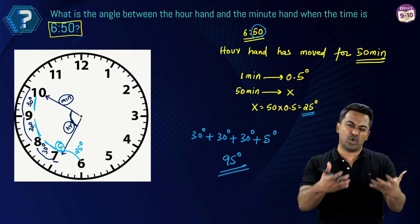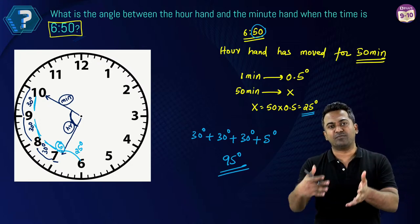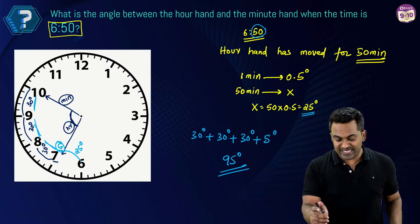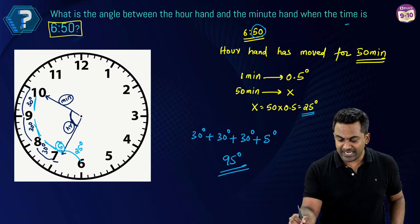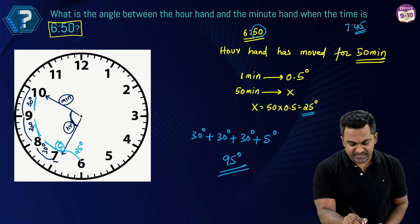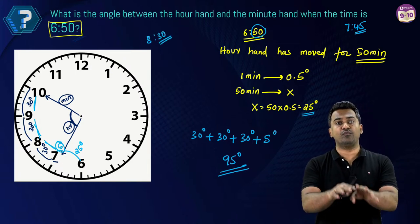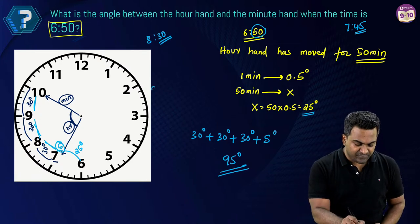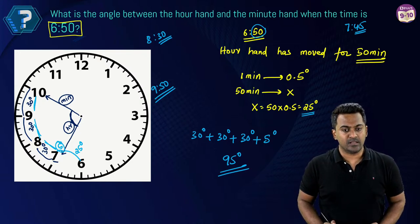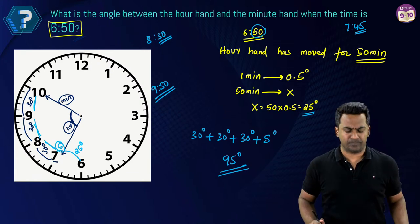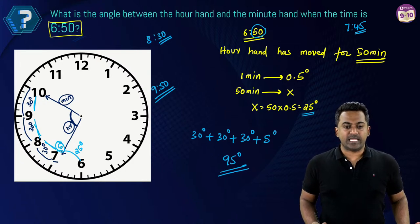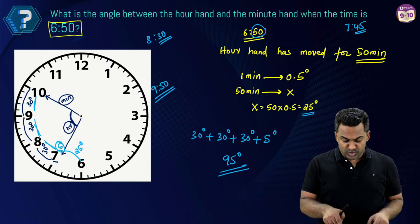At your level, this is all you need to know about clock questions. When the time is 7:45, it means the hour hand has moved for 45 minutes. When the time is 8:30, the hour hand has moved for 30 minutes. When the time is 9:50, the hour hand has moved for 50 minutes. That's it — simple as that.